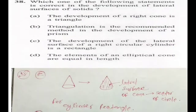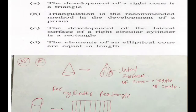In the second question: which of the following statements is correct regarding the development of lateral surface of a solid? In today's recent module I covered how to develop solids. In option A they say the development of a right cone is a triangle — this is not correct.